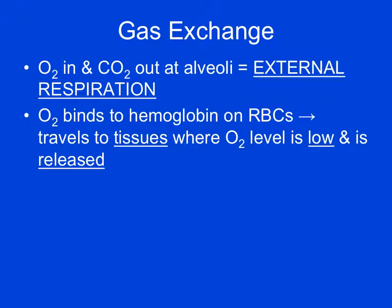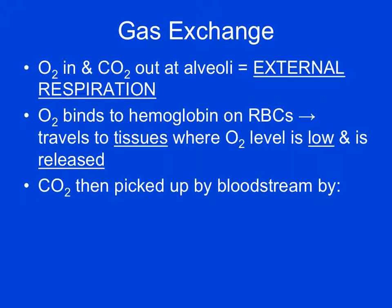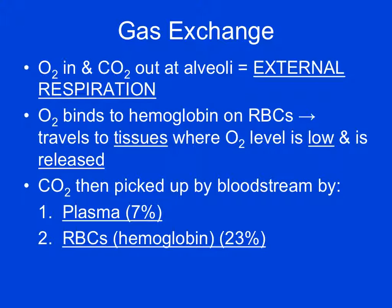The oxygen binds to hemoglobin on our red blood cells and travels to tissue areas where the oxygen level is low, where it then gets released. Carbon dioxide is then picked up in the bloodstream and transported in three different ways. The first way is dissolved in the plasma, which accounts for about 7% — essentially like carbon dioxide dissolved in soda. It can also bind to the hemoglobin on the red blood cells, similarly to the way oxygen binds with hemoglobin.